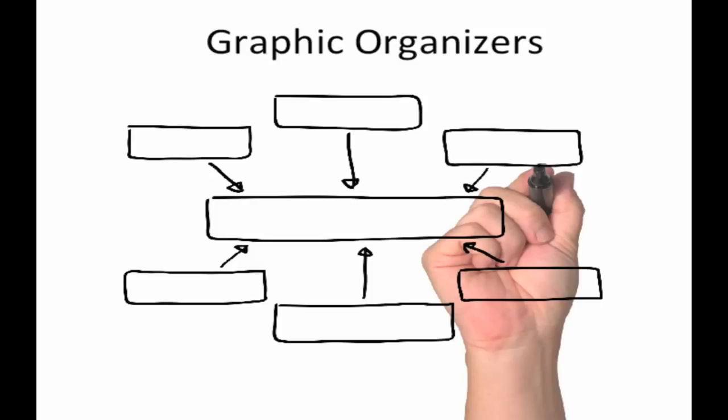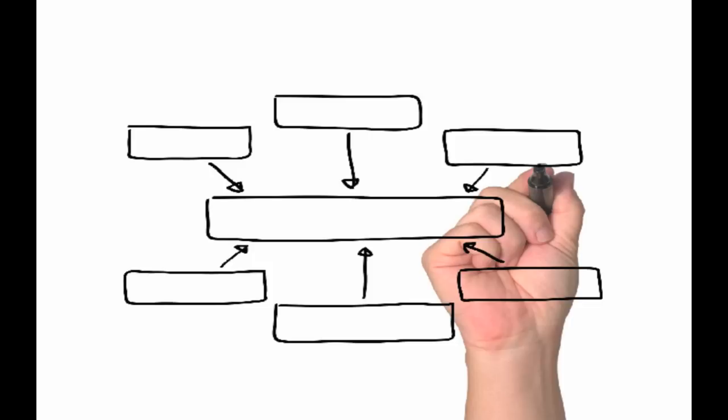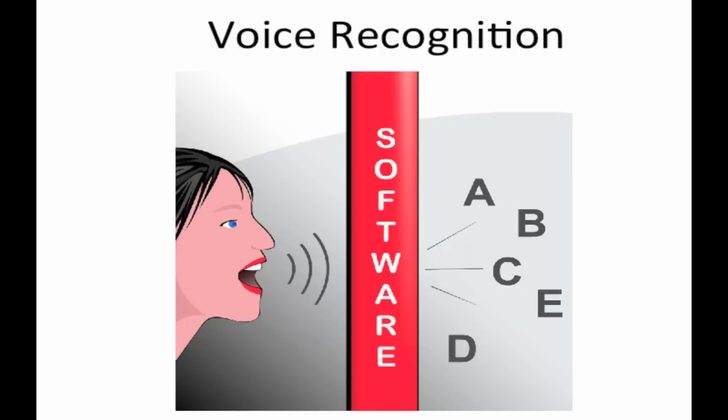Graphic organizer software with outlining and drafting capabilities can also be used to support struggling writers in a number of ways. They can be used as presentations to hold groups for a discussion of relationships and concepts, or by individual students as before, during, and after reading organizers to aid comprehension. Programs that then convert these maps to outlines or drafts can help your learners convert their thinking into writing.